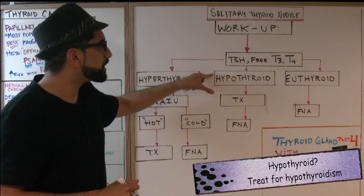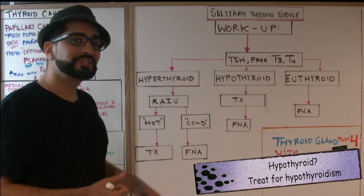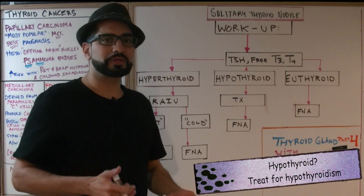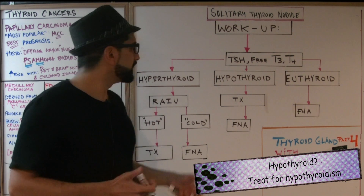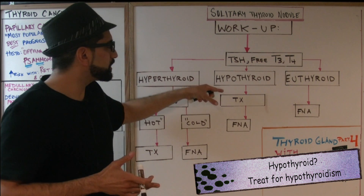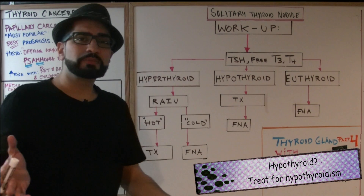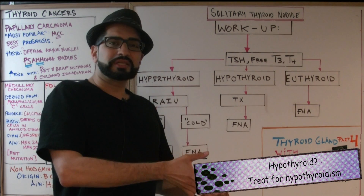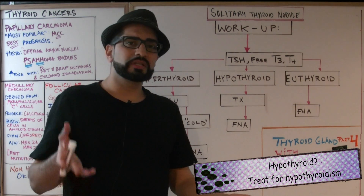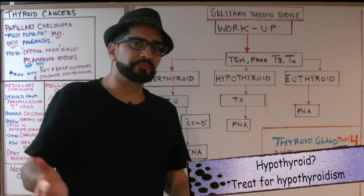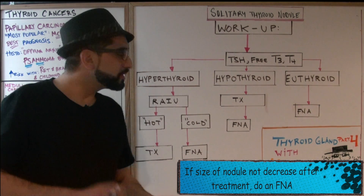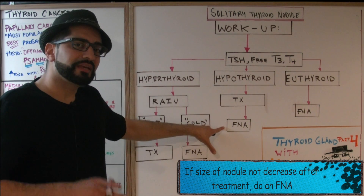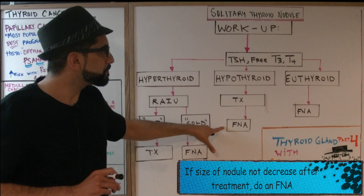If the patient is hypothyroid, that means T3 and T4 are going to be low, and TSH may be normal or even elevated. You go straight into treatment — you treat the patient like a hypothyroid patient and give levothyroxine. If the nodule does not disappear, the next step is FNA, fine needle aspiration.